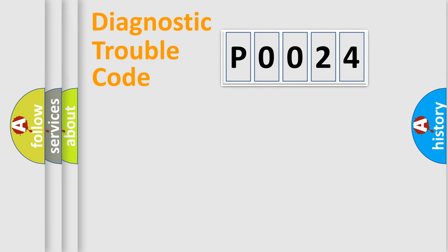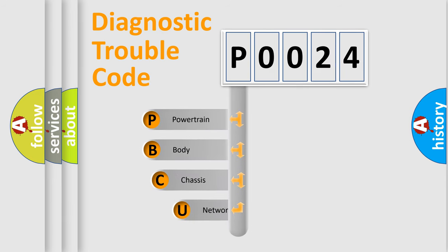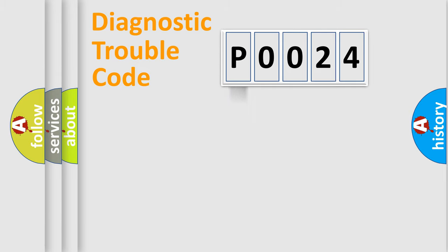First, let's look at the history of diagnostic fault code composition according to the OBD2 protocol, which is unified for all automakers since 2000. We divide the electric system of the automobile into four basic units: powertrain, body, chassis, and network.